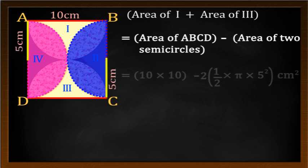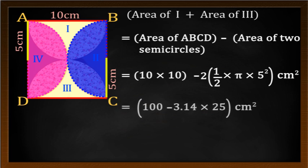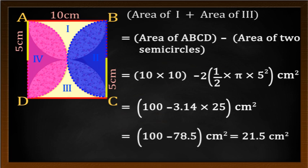This equals 10 × 10 - 2 × (1/2) × π × 5² cm² = 100 - 3.14 × 25 cm² = 100 - 78.5 cm² = 21.5 cm².